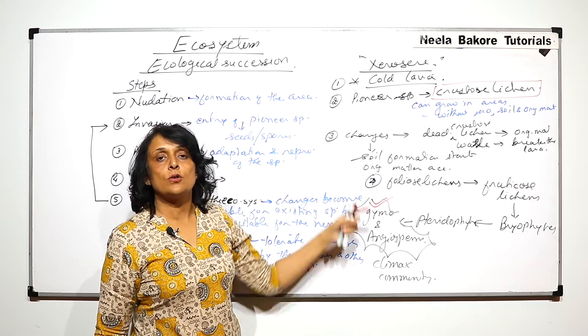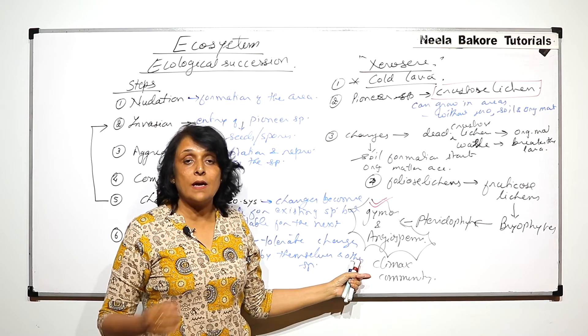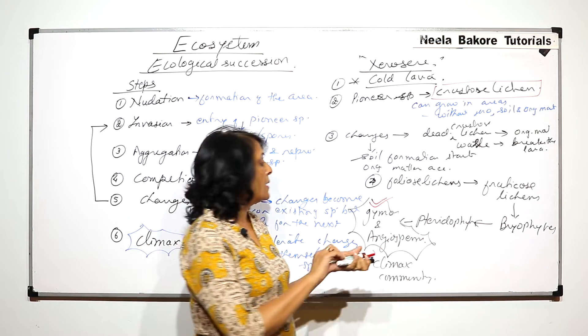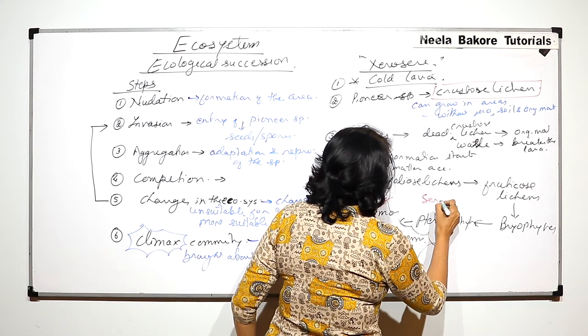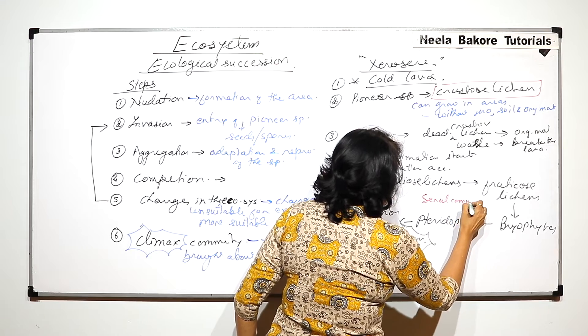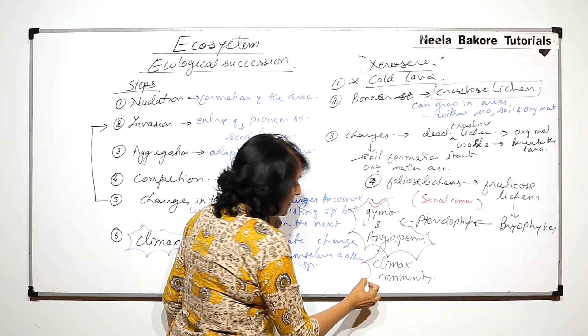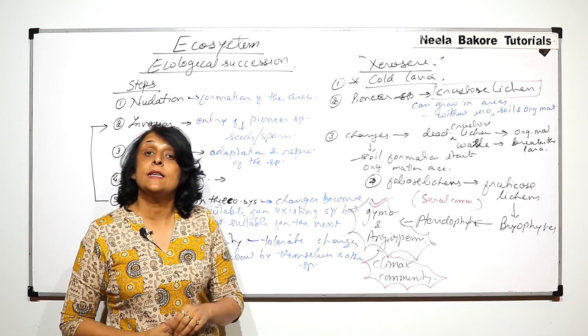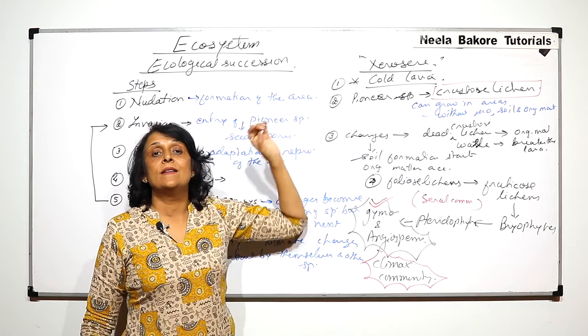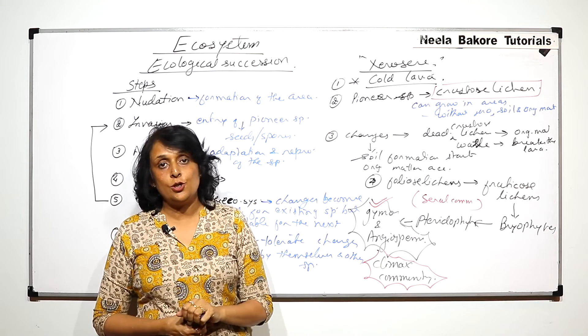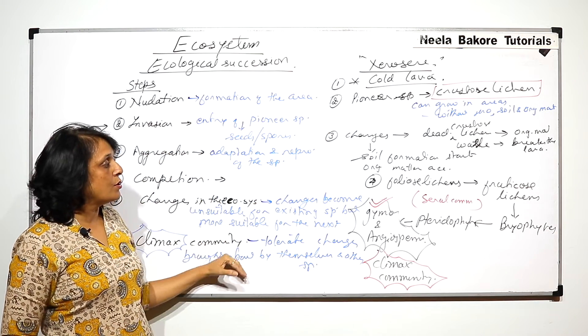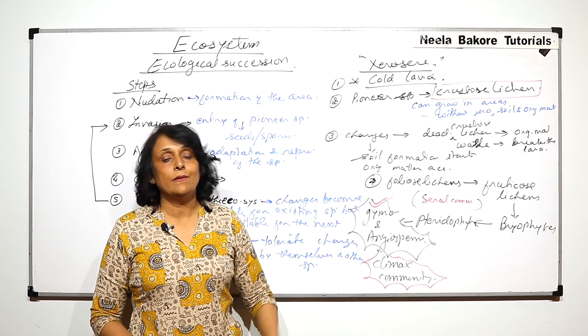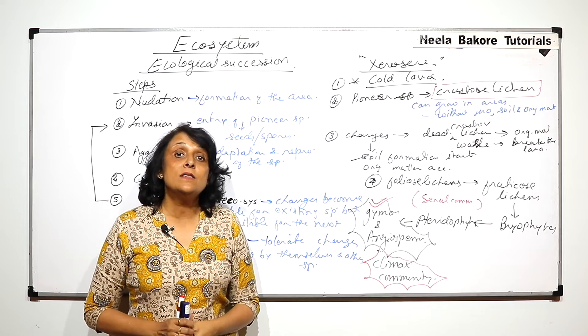Pioneer is crustose, climax is forest, angiosperms, gymnosperms and all these intermediate communities are called the seral communities. These are seral communities and this is the climax community. This is how succession takes place if it has to take place in a dry, xeric condition. We know the steps also and now we know the pioneer species, the seral species and the climax community in a xerosere.